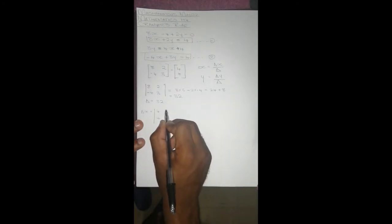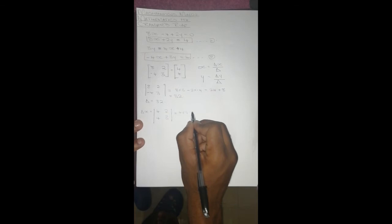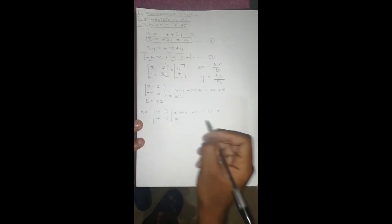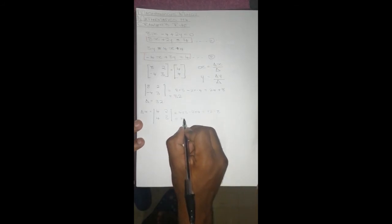That gives us 32, so the determinant of the matrix equals 32. Now for the determinant of x: you substitute the constants at the place of the x-variable column, giving the matrix 4, 2 and 4, 3. The determinant is 4 times 3 minus 2 times 4, which is 12 minus 8, giving us 4. So the determinant of x equals 4.